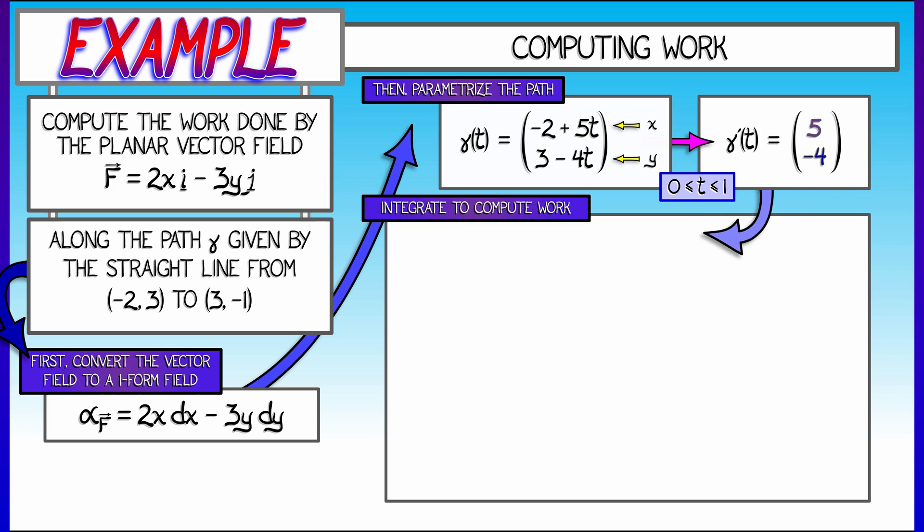Now, to get the network done by the field along the path, you integrate this work one-form. You integrate 2x dx minus 3y dy along gamma. Converting this to an integral in the parameter t, what do we do? We take 2 times x, which is negative 2 plus 5t, times dx, which is 5, the x component of gamma prime.